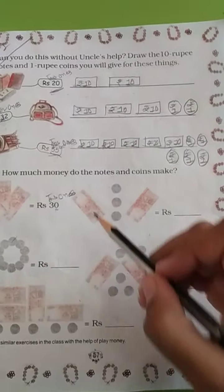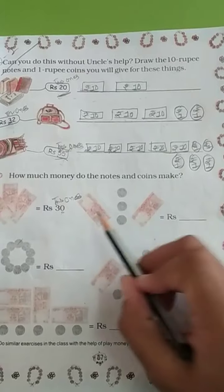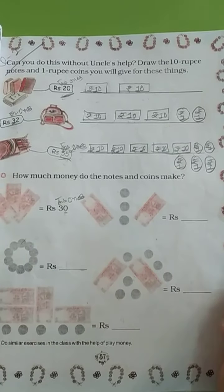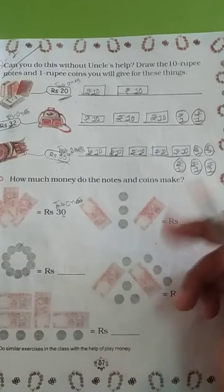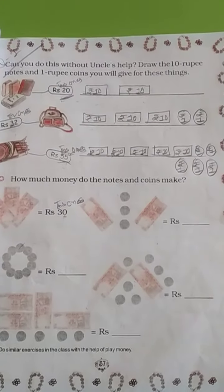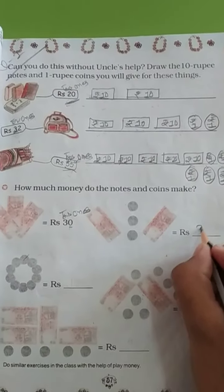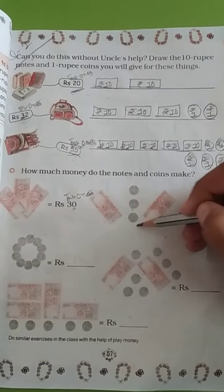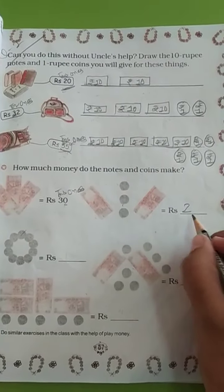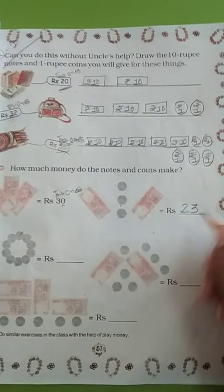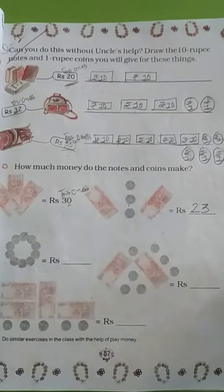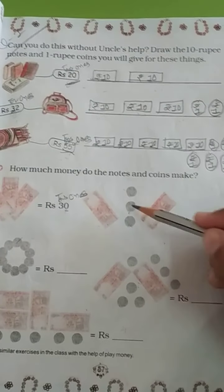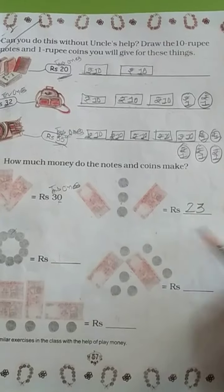Second example: yahaan par 10-rupee ke 2 notes diye hain, to tens place par 2 aayega. Aur 1-rupee ke coins — 1, 2, and 3 — so ones place par 3 aayega. That means yeh kitne rupees hain? 23. We can also count: 10 + 10 = 20, then 21, 22, 23. Equal to 23.